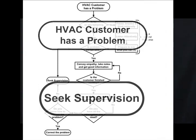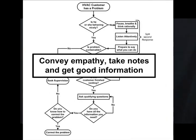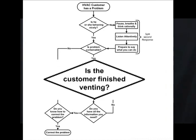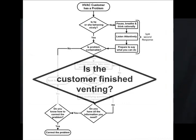Then there's the process shape, which illustrates what it is you do at that stage in the flowchart. Then there is the decision shape, which invites you to make a decision and then goes one way or the other based on the answer to the question in the shape.